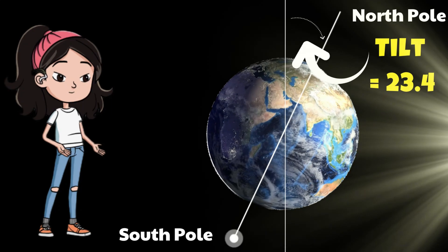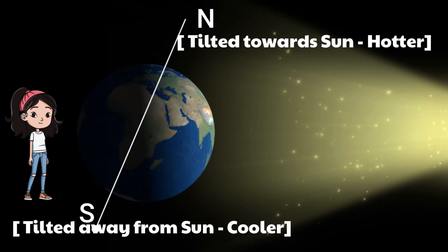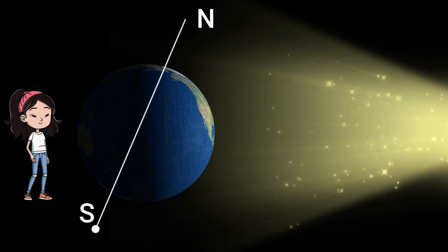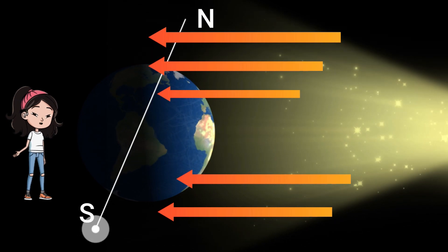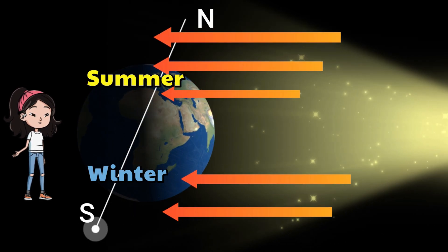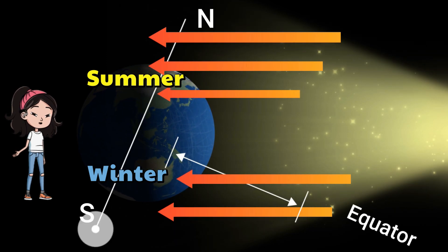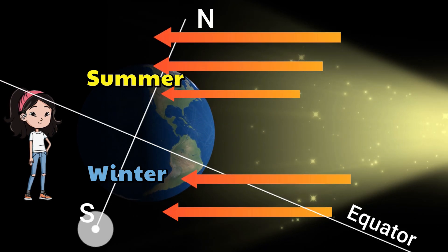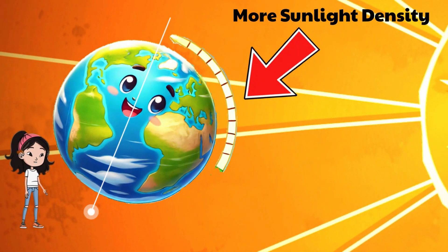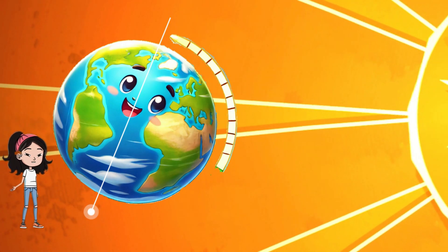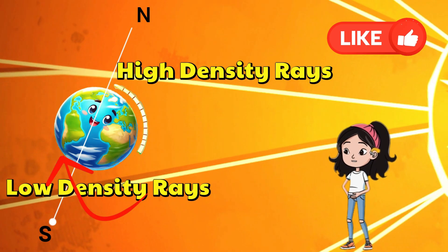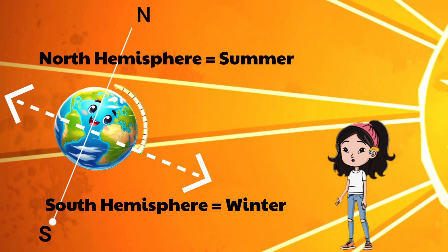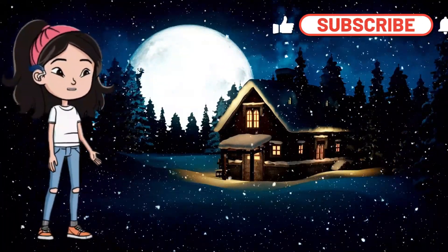If the earth were not tilted on its axis, there would be no seasons like the ones we experience today. The tilt of earth's axis causes different parts of the planet to receive varying amounts of sunlight throughout the year. As earth orbits the sun, the tilted axis makes different parts lean closer to or farther from the sun at different times, giving us winter, spring, summer, and autumn. When a part of the earth tilts toward the sun it receives more sunlight, making it warmer; when it tilts away it gets less sunlight, making it colder. The areas between these extremes experience spring or autumn.